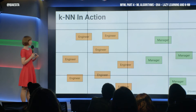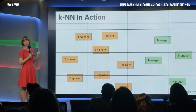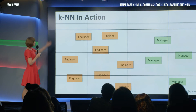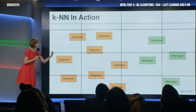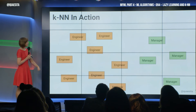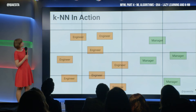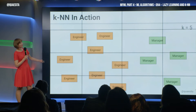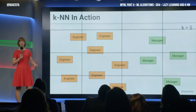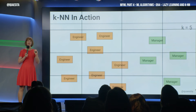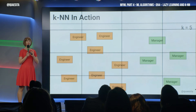So, let me show you an example. Here is a desk area. We've got engineers and managers sitting in this desk area. We have the north-south coordinates and the east-west coordinates. And we'll see this in action with K equals five. The technique finds five nearest neighbors — you have no idea what's coming.